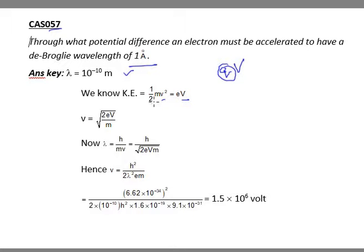It will be 2 times eV by m. This small v is velocity, not capital V. So velocity equals to square root of 2e times potential difference by m.